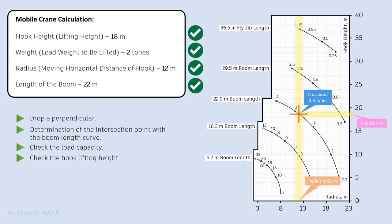So, following the chart, the mobile crane is capable of lifting 2.5 tons at the moving horizontal distance of the hook of 12 meters, to a height of 18.7 meters with a boom length of 22.9 meters, which fully satisfies the calculated parameters. Thus, the crane can be safely used.